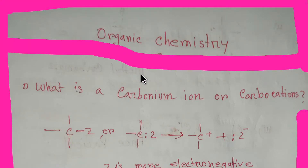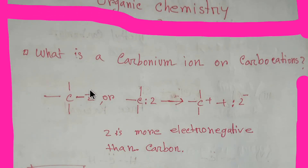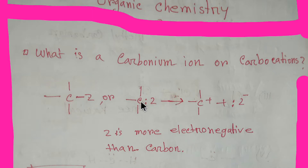Hey, what's up guys! Today we are going to learn about carbonium ions, or carbocations. Here is a picture of an organic molecule. You know that this is a covalent bond, and in a covalent bond we have two electrons. But due to the heterolytic fission of this bond, we will get two species — one positive and one negative.